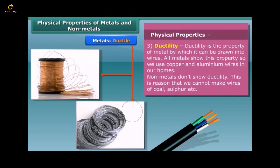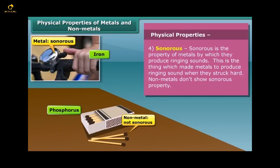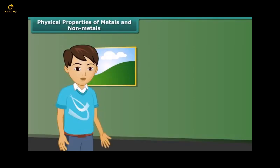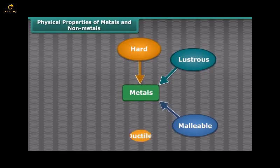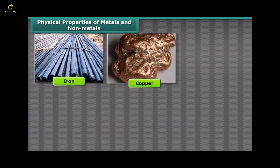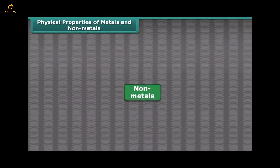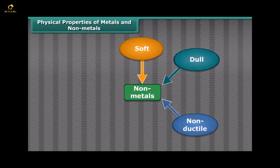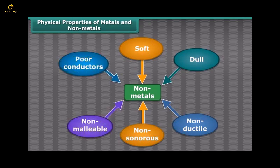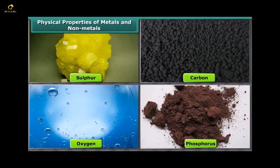Non-metals don't show ductility. Another property of metals is that they are sonorous — metals produce ringing sounds when struck, and are said to be sonorous. Materials other than metals are not sonorous. By these properties we can say that metals are hard, lustrous, malleable, ductile, sonorous, and good conductors of heat and electricity. Iron, copper, aluminium, calcium, magnesium etc. are examples of metals. Non-metals like coal and sulfur are soft, dull, non-ductile, non-sonorous, non-malleable, and poor conductors of heat and electricity. Sulfur, carbon, oxygen, phosphorus etc. are examples of non-metals.